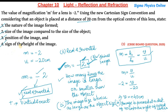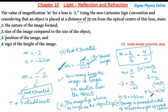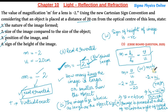For the fourth question — the sign of the height of the image — magnification equals hi divided by ho, and the magnification value is minus 2. The height of the object ho is always taken as positive by sign convention, so the height of the image hi must be negative. The negative height indicates that the image is real and inverted, consistent with our answer to the first part.